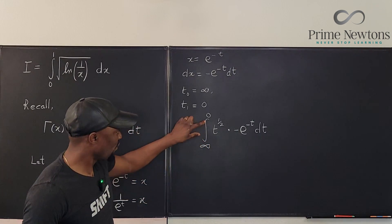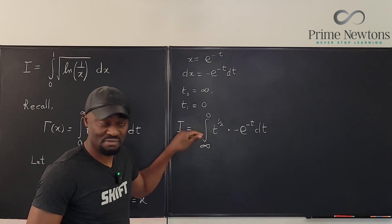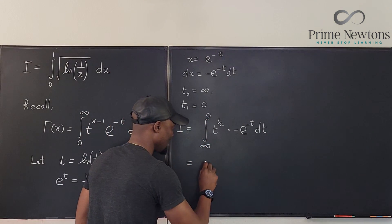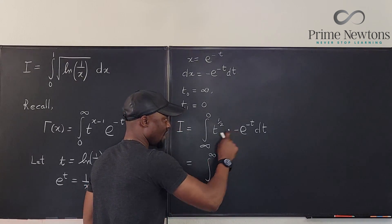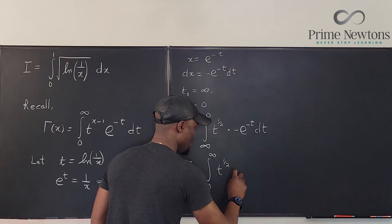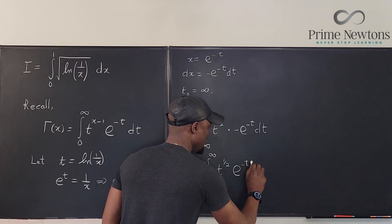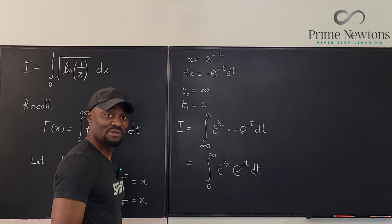But we can also flip this so that the minus sign cancels the minus that would have been generated from the flip. So that gives us the integral from 0 to infinity. We've taken care of this minus sign. You have t to the 1 half, you have e to the negative t dt. Beautiful.